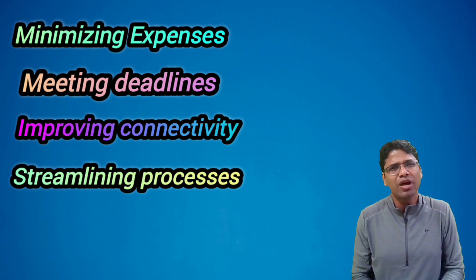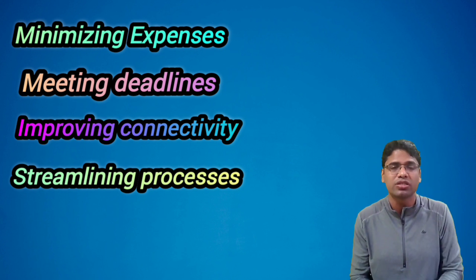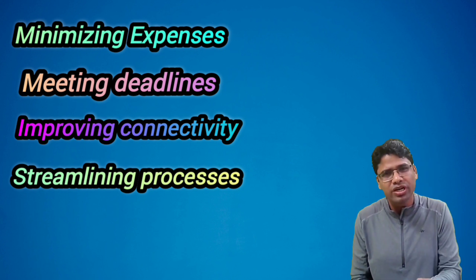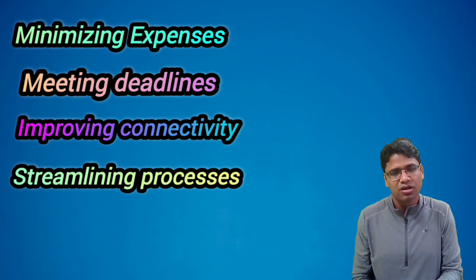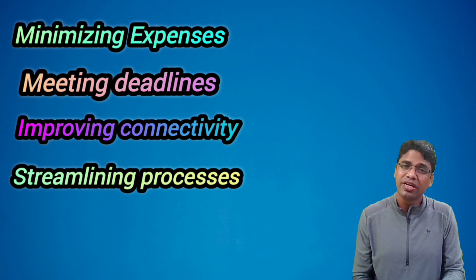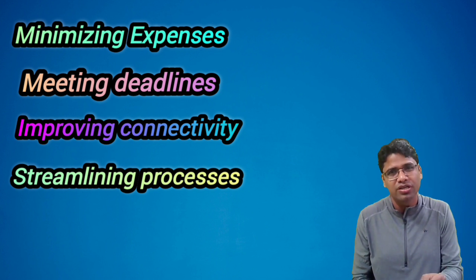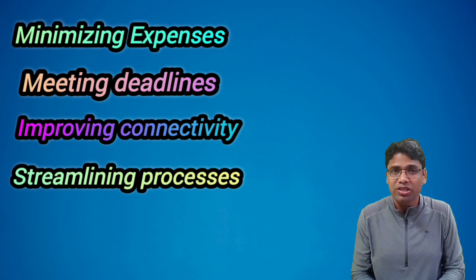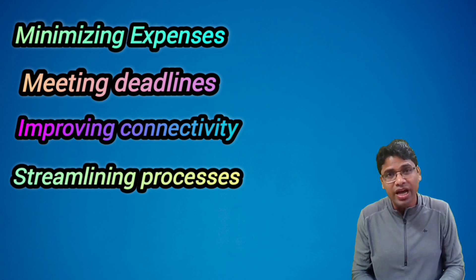Streamlining process means an organization is made up of many processes. Consider an example of a manufacturing unit — it has many departments, each with its own process: production to produce the product, quality control, quality assurance, dispatch, stores, commercial, and maintenance. Streamlining all these activities is the best way to optimize and enhance productivity.